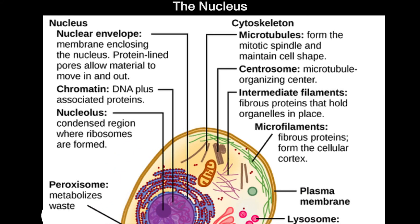The DNA is part of a material called chromatin. The DNA is associated with specific proteins called histones, or histone proteins. The nucleolus again is that condensed region where the ribosomes are formed.